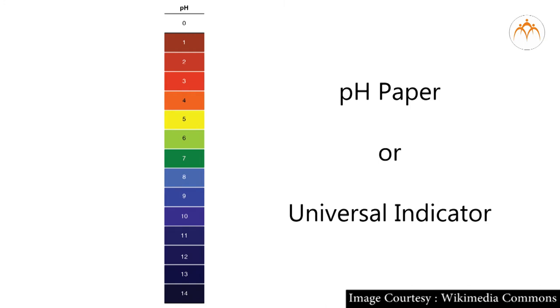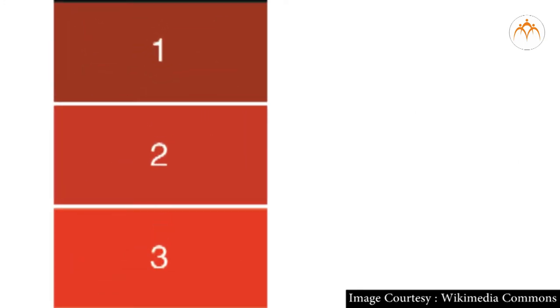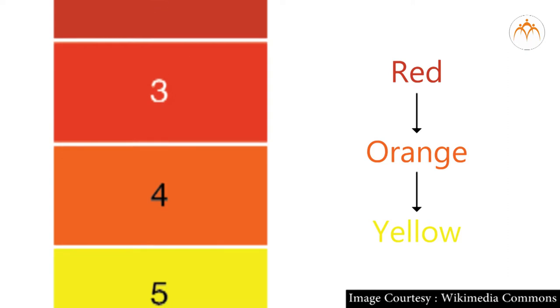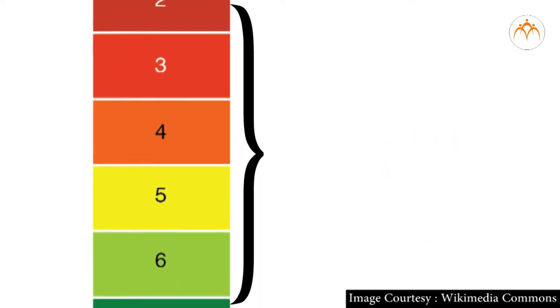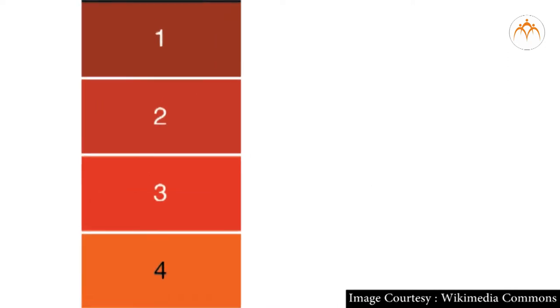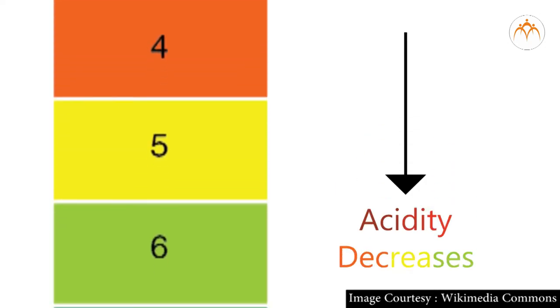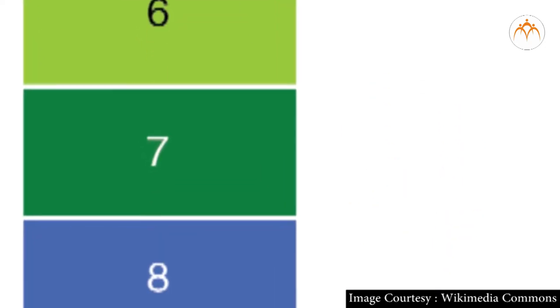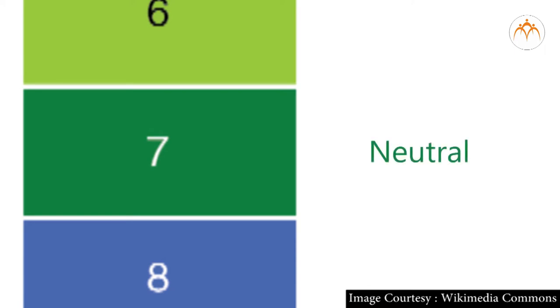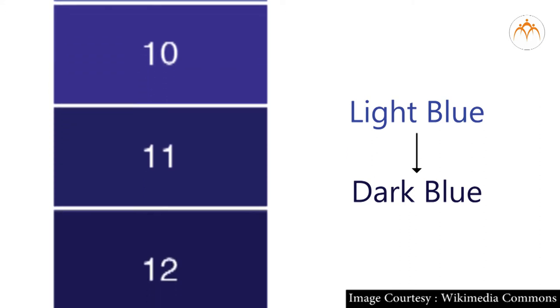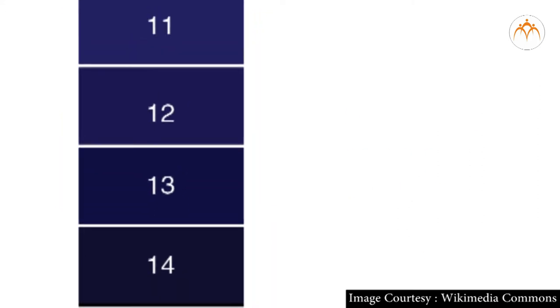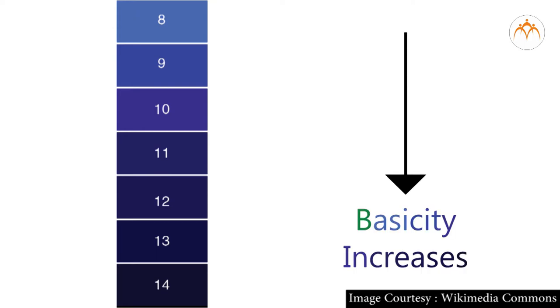pH paper or universal indicator shows red to orange to yellow color change to indicate acidic nature of solution and value ranges between 1 to 7. Acidity decreases from 1 to 7. Value 7 indicates that solution is neutral and shows green color. Light blue or dark blue color range indicates basic nature of solution. It ranges between 7 to 14 in increasing order.